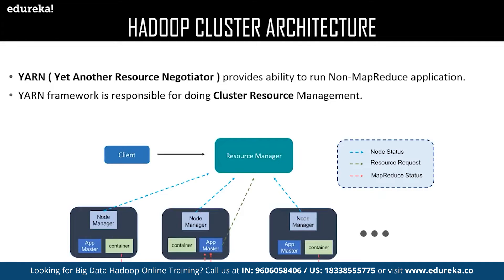Now let us discuss YARN — Yet Another Resource Negotiator. YARN consists of the following elements: node manager, app master, and container. Node manager is a Java utility that runs as a separate process from the web logic server, allowing you to perform common operations for a managed server regardless of its location with respect to the administration server. App master is responsible for negotiating resources between the resource manager and node manager. The container is a collection of reserved resources allocated from the resource manager to work on the task assigned by the node manager.